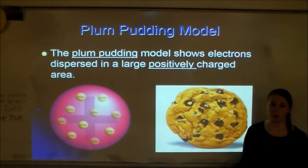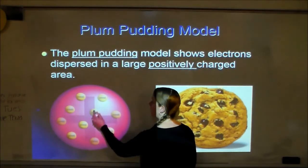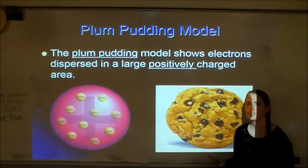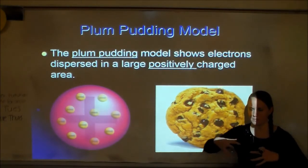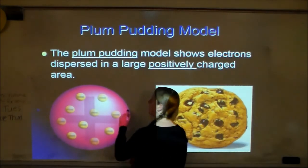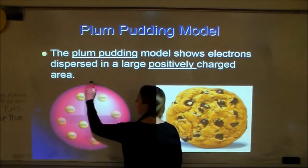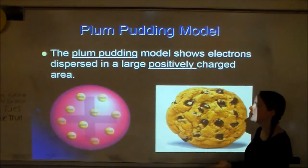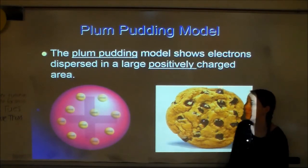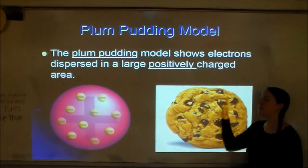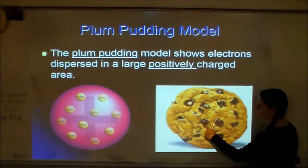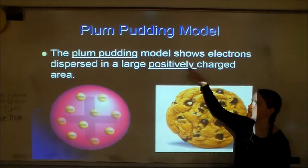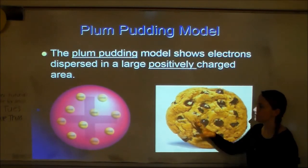He came up with what he called the plum pudding model. In the plum pudding model, he knew atoms must be neutral, so once he discovered negative particles he knew there had to be something positive. He envisioned it like a big ball of positive force field energy with electrons dispersed throughout. He called it the plum pudding model because in Europe people eat plum pudding. We might think of it as a chocolate chip cookie — the cookie is the big positive part and the chocolate chips are the negative electrons.